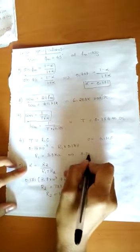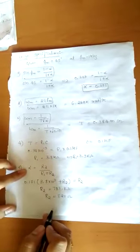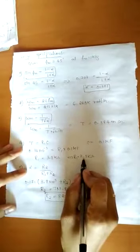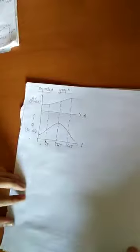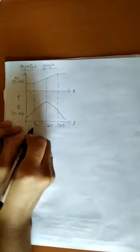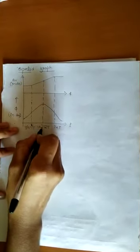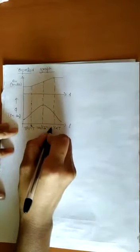After calculating R1 and R2, we need to calculate the lower and higher angular cutoff frequencies. In the expected graph, 1/T is ω_c1, 1/(√α · T) is ω_cm, and 1/(α·T) is ω_c2, the higher cutoff angular frequency.